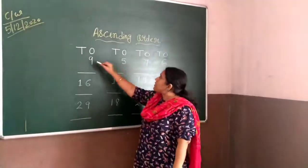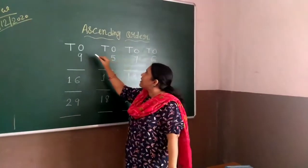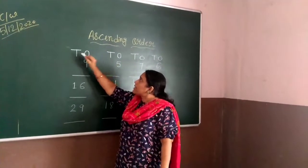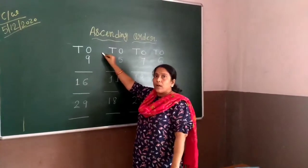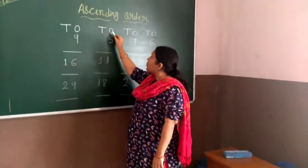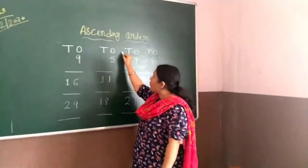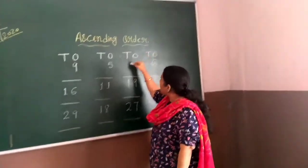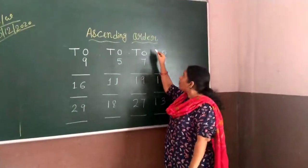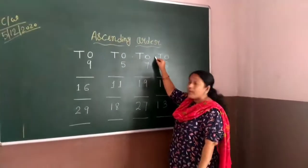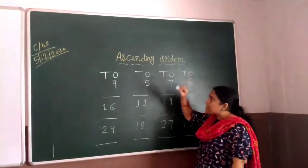You can see I have written here ones and tens — keep one box gap. Again you have to write ones and tens, keep one box gap. Again you have to write ones and tens, keep one box gap. Then again write ones and tens.